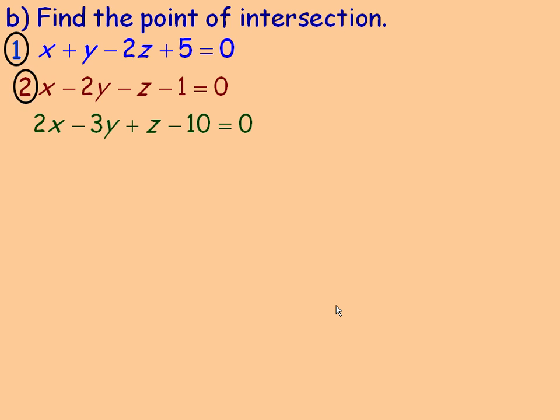Now using the same planes — I'll call them planes 1, 2, and 3 — we're going to eliminate a variable. The approach is to choose a variable to eliminate from one pair of equations, then choose a different pair and eliminate the same variable. This reduces the system from three equations in three variables down to two equations in two variables. I'm going to eliminate x.